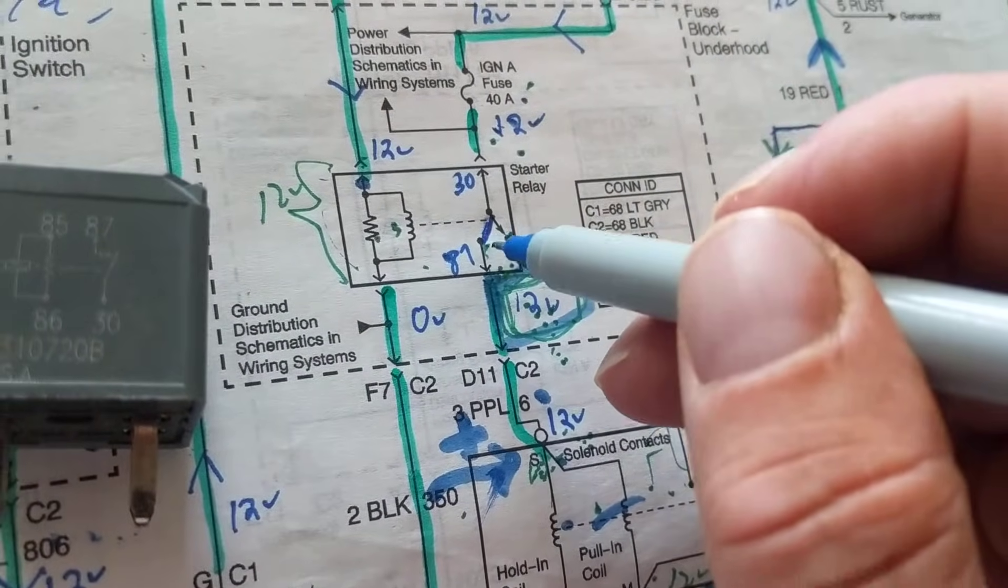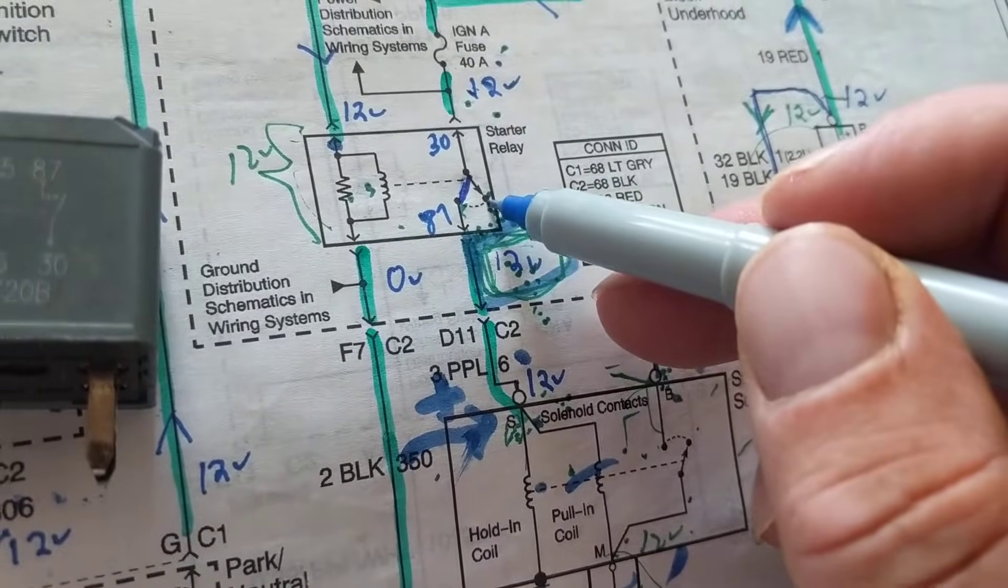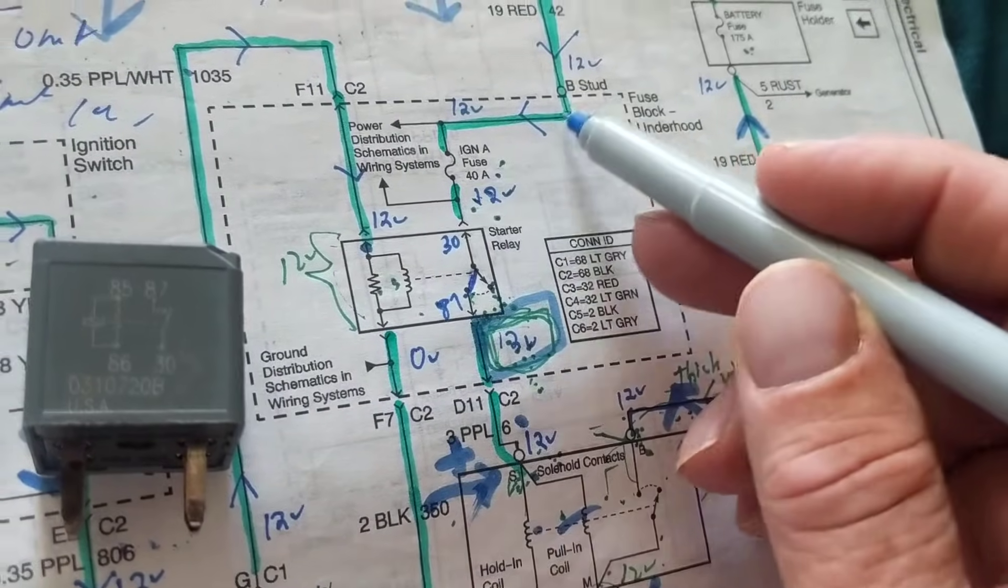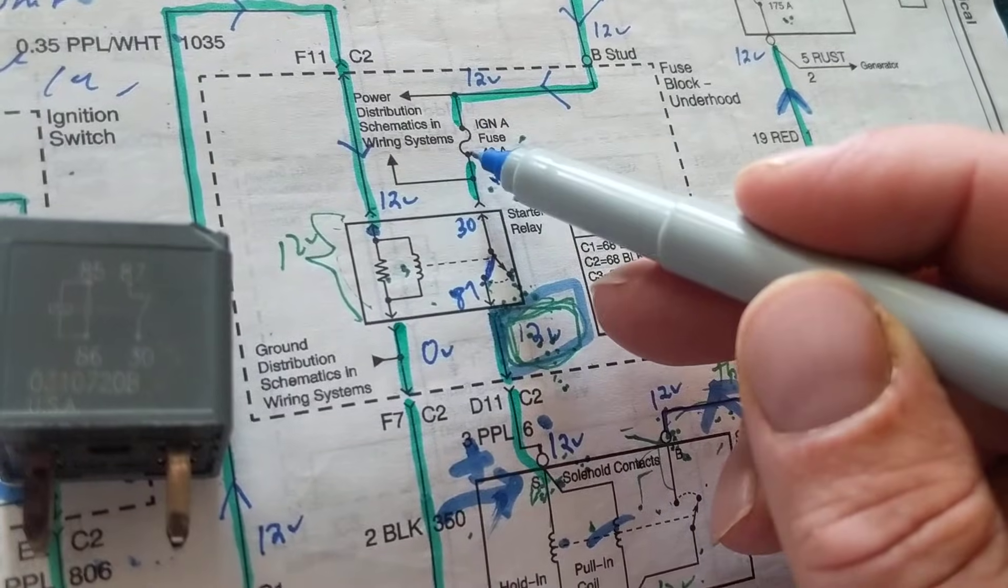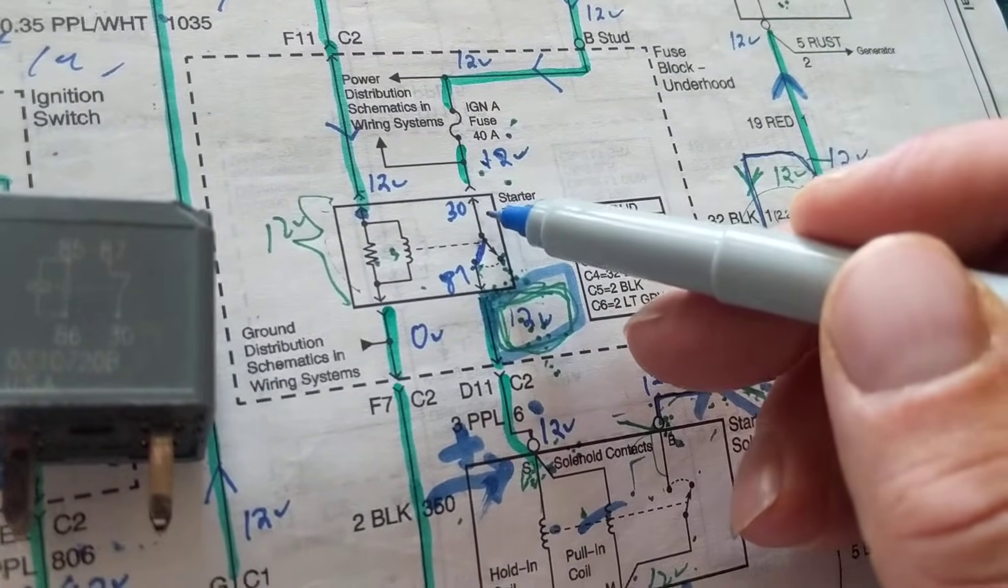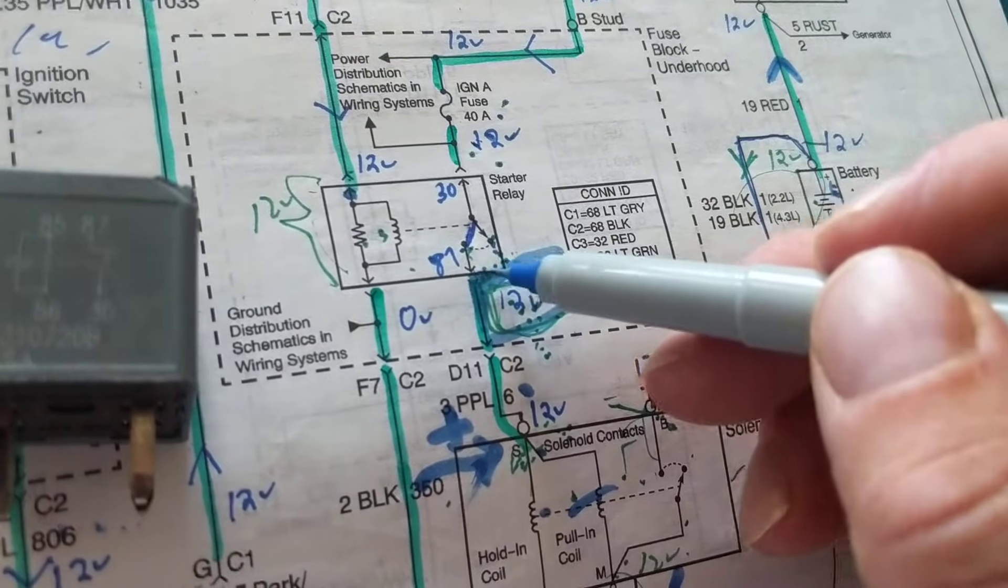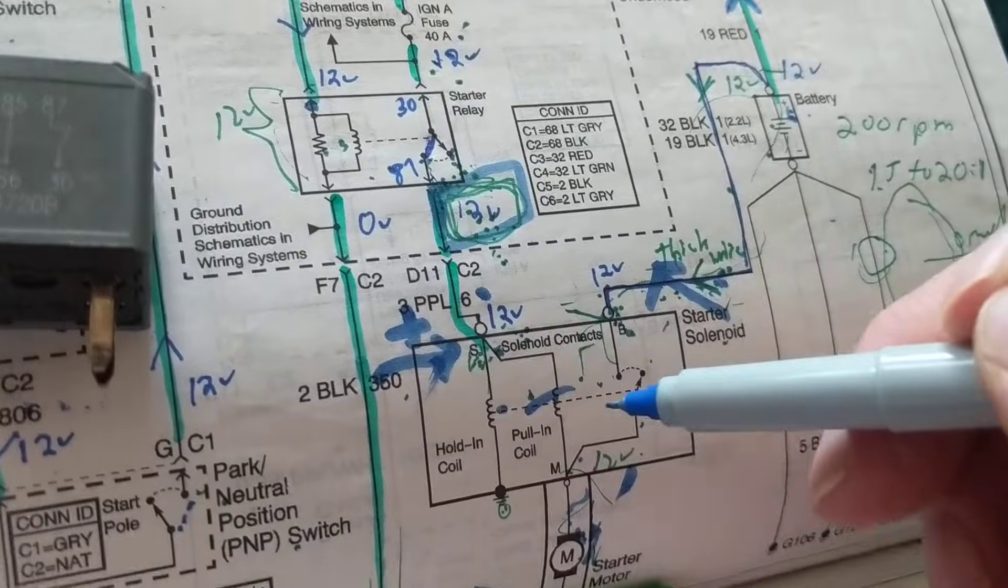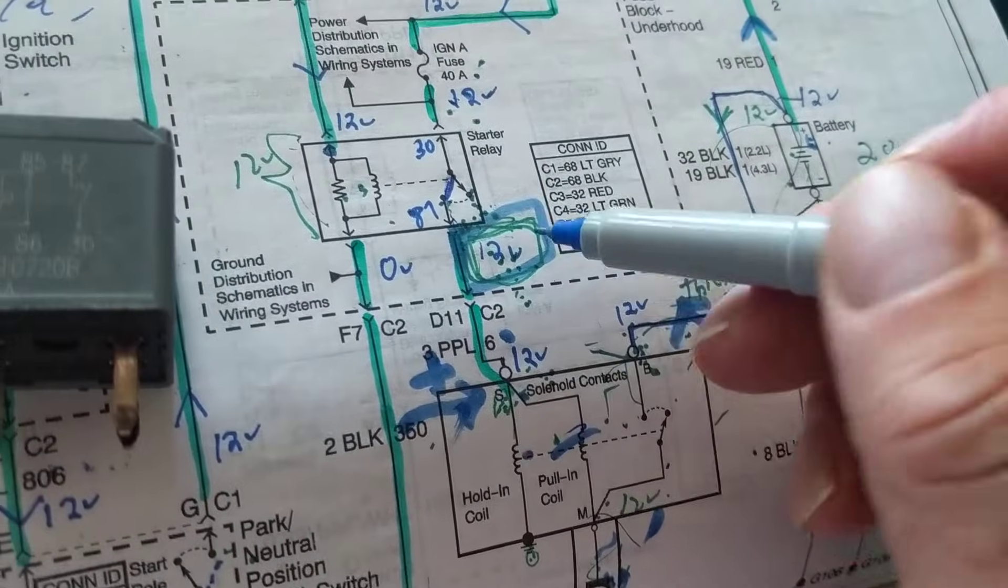When it is in this state, it went from here to here. We are closing the circuit, current can flow now. Current flows through the fuse, through the wire, through terminal 30 and comes out of 87, to the load which is the starter motor or the solenoids.